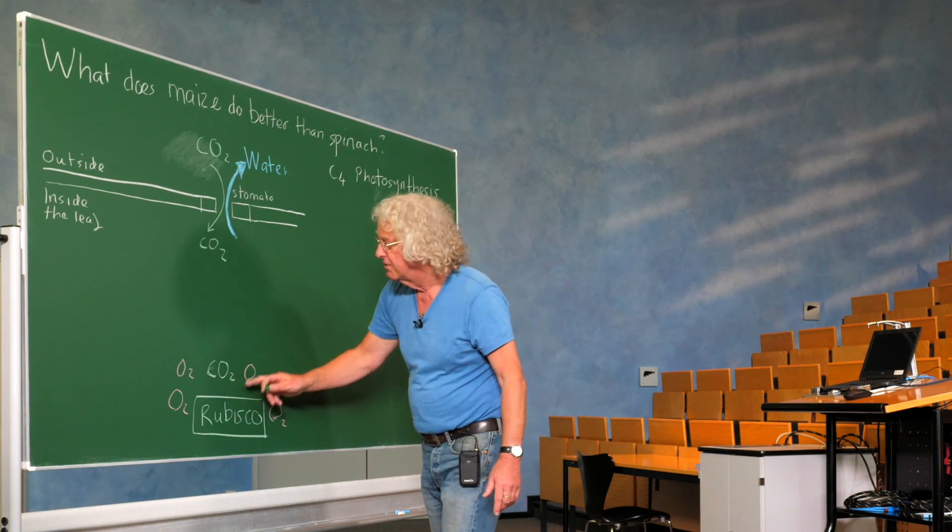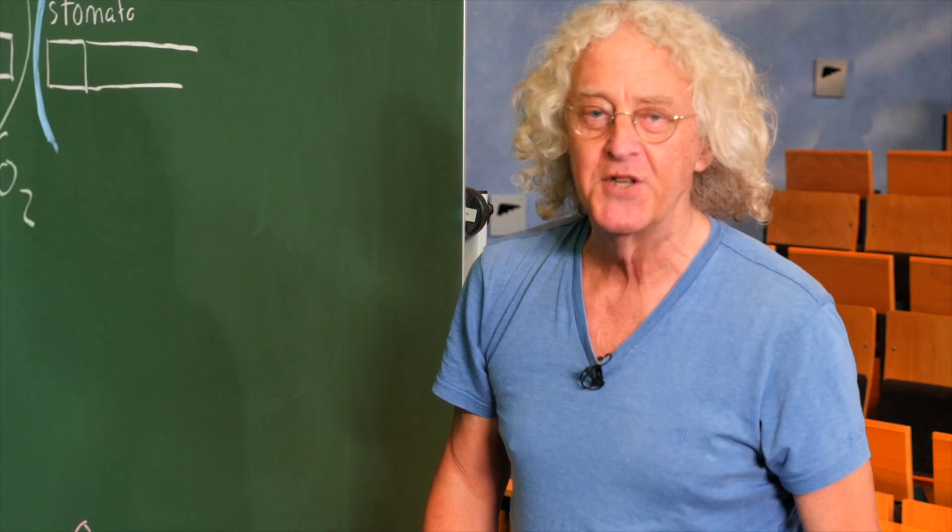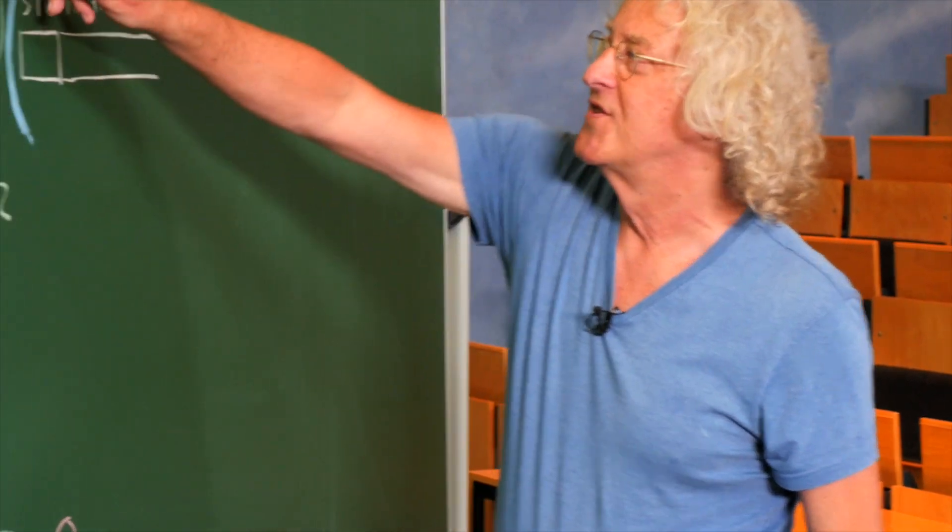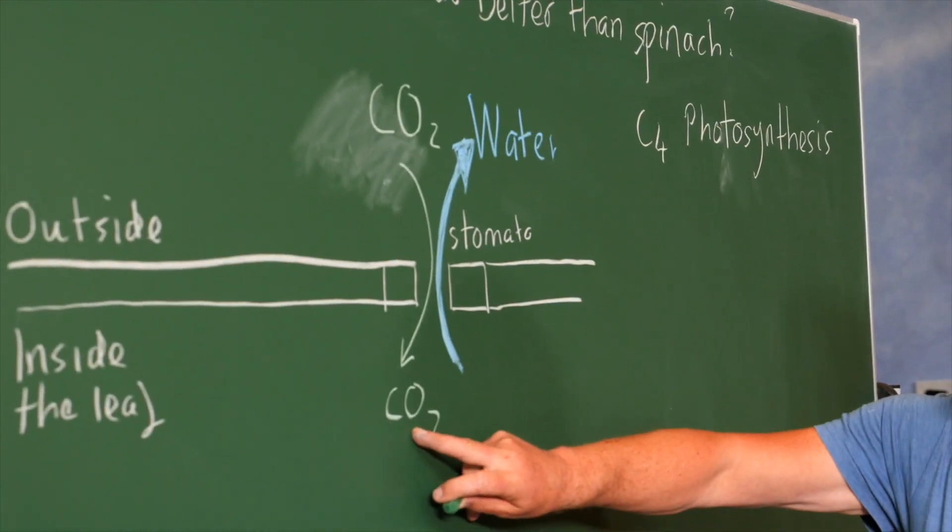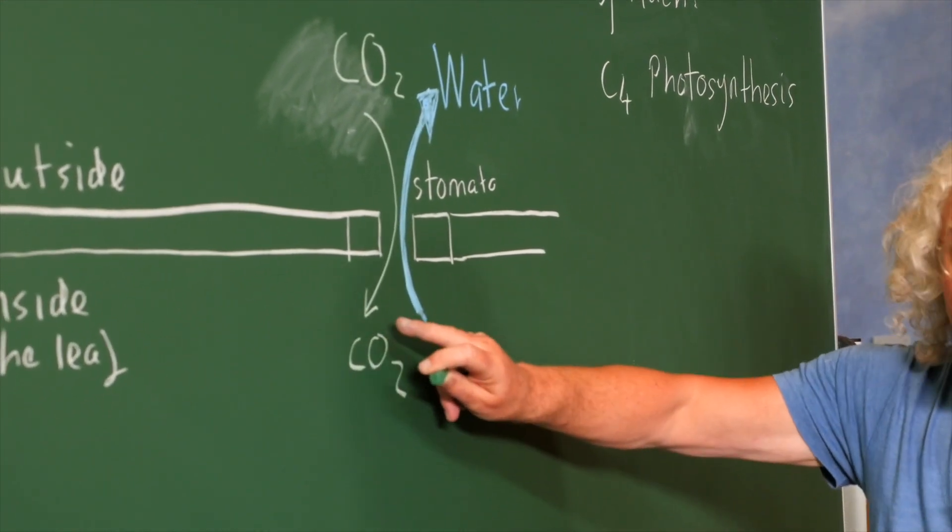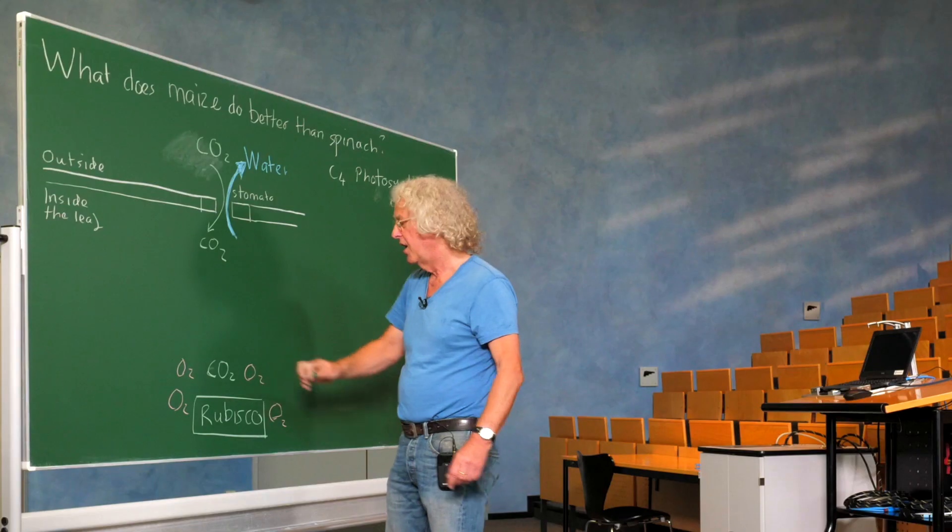So this Rubisco needs a lot of carbon dioxide, whereas the entry of carbon dioxide into the leaf will be better if the carbon dioxide is low. Low here, high here.